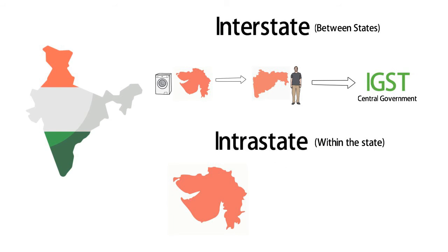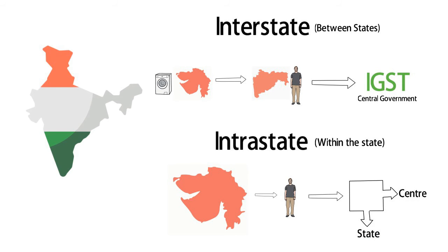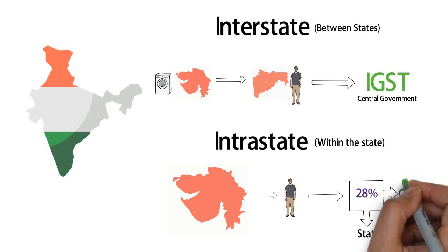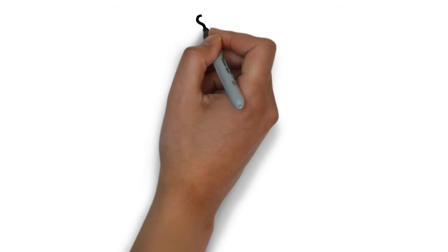In another case, if the product is sold by a dealer in Gujarat to a customer in Gujarat itself, then the tax collected is shared between Gujarat and the center. Let us assume the tax collected is 28%, then 14% goes to the center, which is called CGST, and 14% goes to the state, which is called SGST.